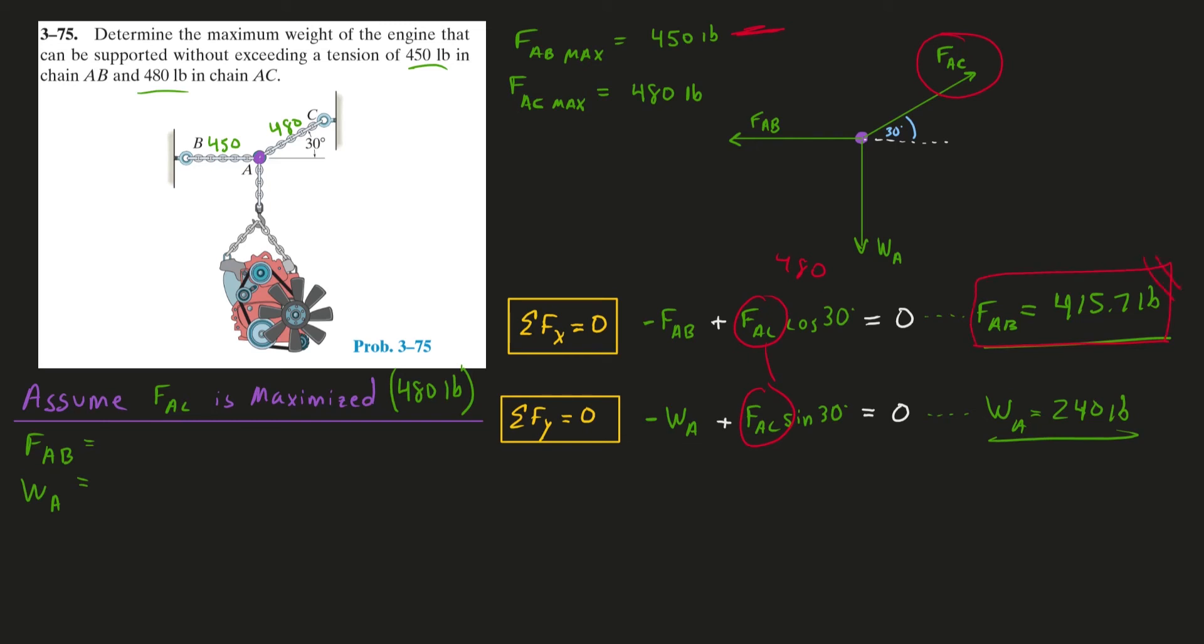Sometimes you'll do your math, and you'll solve for that other force option, and you'll get some big number. Let's say we got 460. If we got 460, we know that this situation is not reality. This is not what is happening.